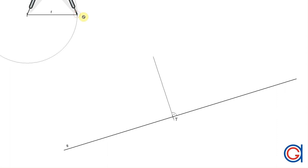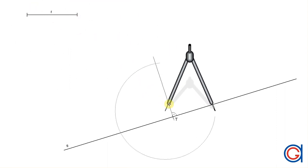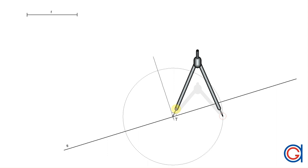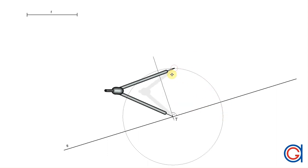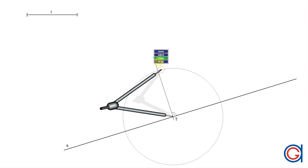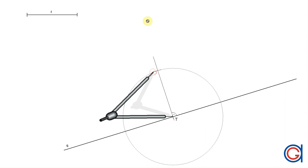So setting the compass to the length of the radius r and setting the compass on tangent point t, we describe an arc cutting the vertical line at a new point which will be point o or the origin of the circle that we want to draw.